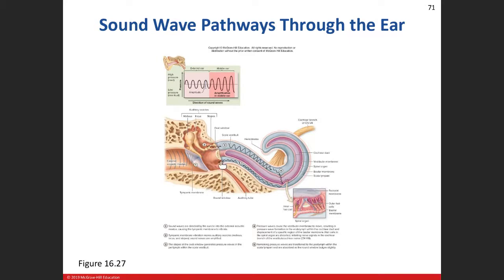As the wave travels through liquid, it starts to get weaker and weaker — just like when you throw a rock into a pond and the energy disperses. The pressure wave just becomes weaker and weaker as it travels, and then it gets absorbed at the round window.